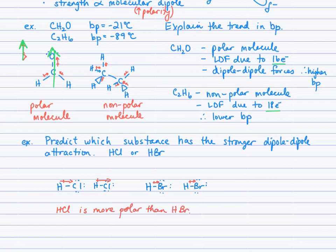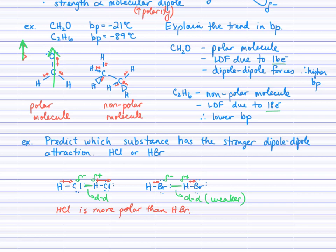Because of the greater polarity in HCl, the partially negative end of an HCl molecule attracts the partially positive end of an adjacent molecule with a stronger attraction. The dipole-dipole attraction in HBr is weaker because HBr is less polar. Therefore, the dipole-dipole forces between HCl molecules are stronger than those between HBr molecules.